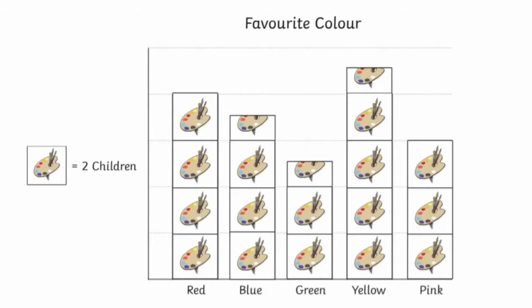If we look at the green column, we can see two full pictures and one half of a picture. We know that each picture represents two, so we'd multiply 2.5 — the number of pictures — by two to get five. That means that five children chose green.